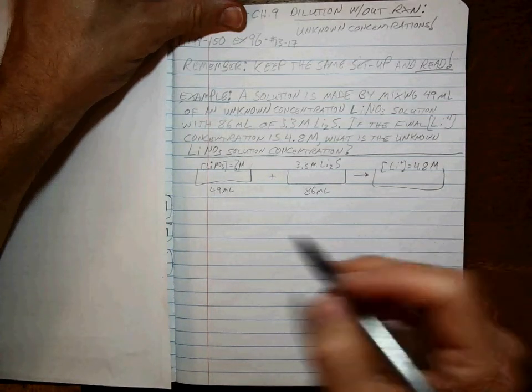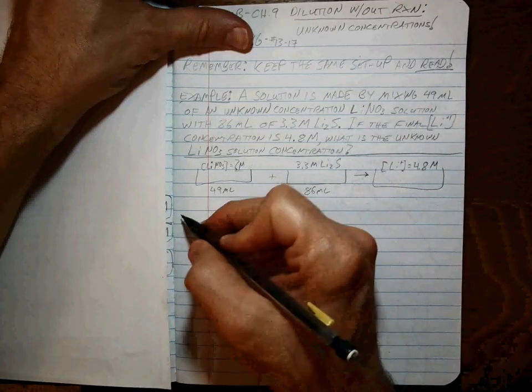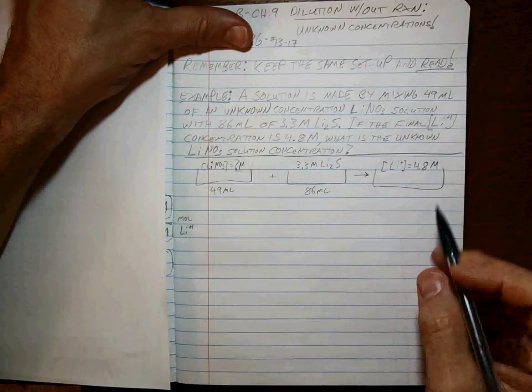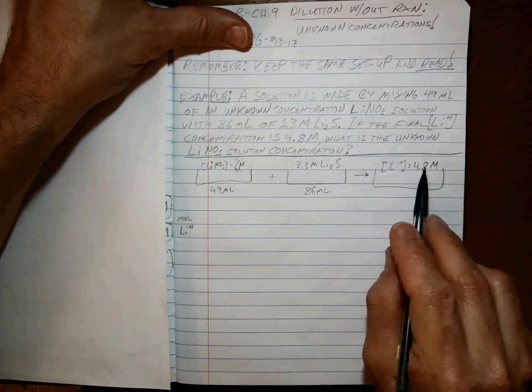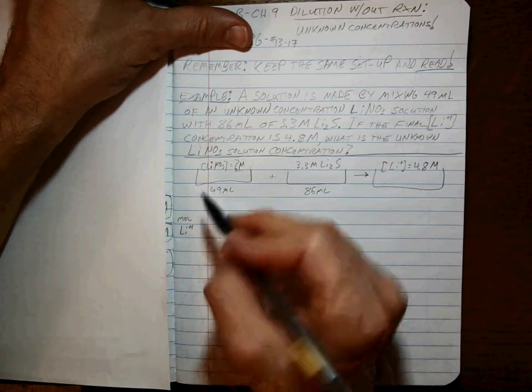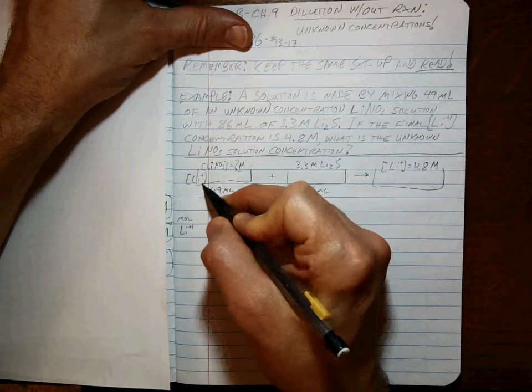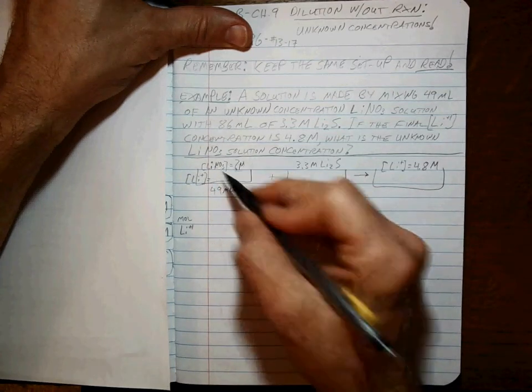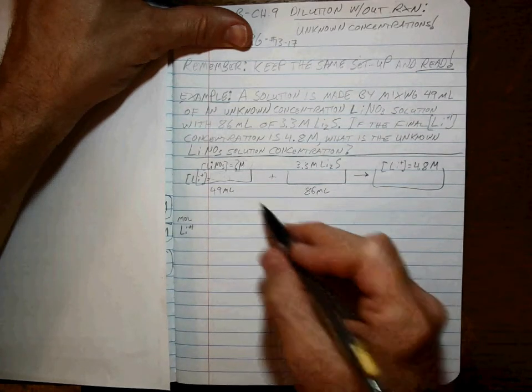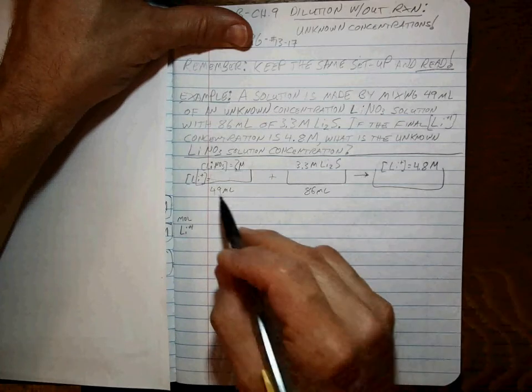They want to know what this is. Well, I think it's pretty clear that the only thing we really need to worry about here is the lithium ion, because the lithium ion is all we get here. We know there's lithium ions here. And we know if we know what the lithium ion concentration is here, it's going to be the same as the lithium nitrate.